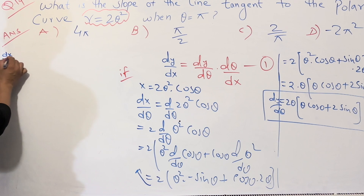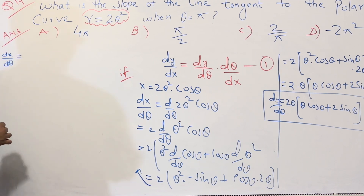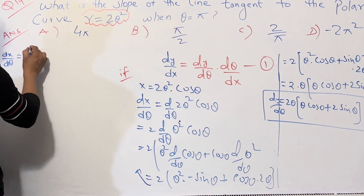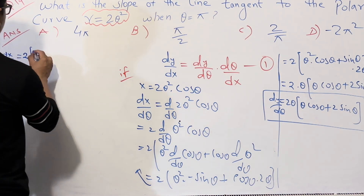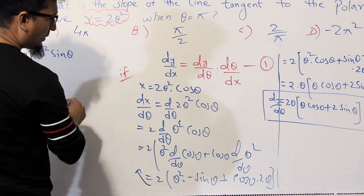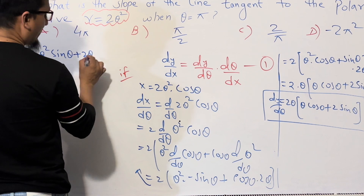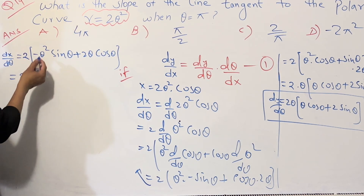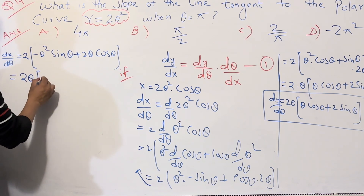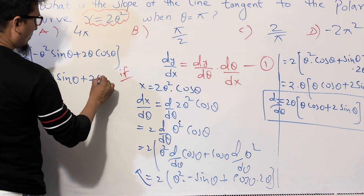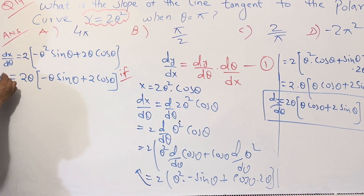So dx/dθ = 2[−θ² sin θ + 2θ cos θ]. Taking θ as a common factor: dx/dθ = 2θ(−θ sin θ + 2 cos θ). This is the value of dx/dθ.